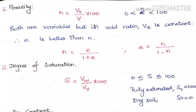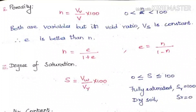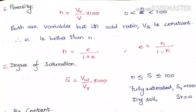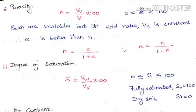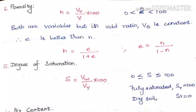The next property is porosity, denoted by n, which is the ratio of volume of voids to the total volume. Since the volume of voids cannot exceed the total volume, the range of porosity is from 0 to 100. Both VV and V are variable, but VS is always constant — this is why void ratio, which uses VS, is preferred over porosity. The relation between them is: n = E / (1 + E) and E = n / (1 - n).